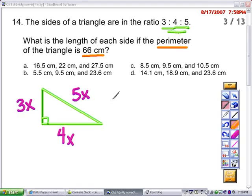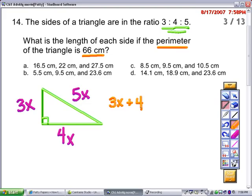So my equation is that 3x plus 4x plus 5x, the sum of all the sides, must equal the perimeter.